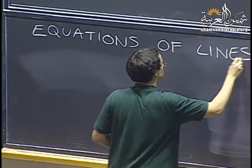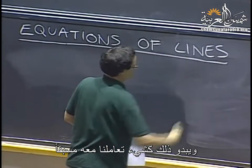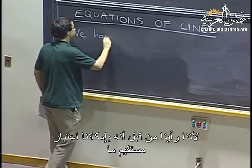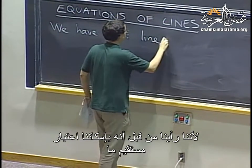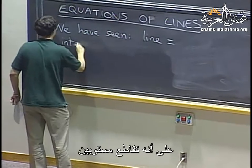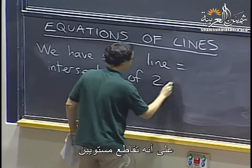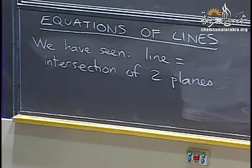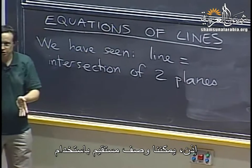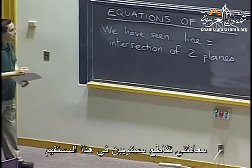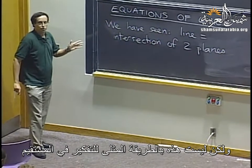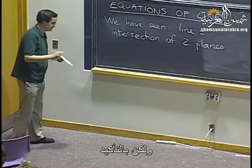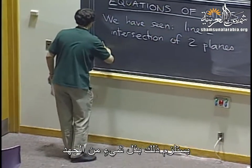In a way, this seems like something we've already seen, because we can think of a line as the intersection of two planes, and we know what equations of planes look like. So we could describe a line by two equations telling us about the two planes that intersect on the line. But that's not the most convenient way to think about a line usually. So instead, there's another representation of a line.